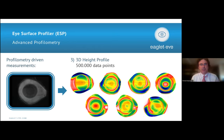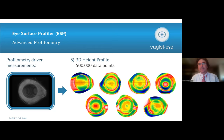You can see asymmetry and any kind of protrusions or lesions — such as a pinguecula — which you'll be able to detect and measure. So when fitting a scleral lens, you'll get all the detail you need to prevent a lot of refits.